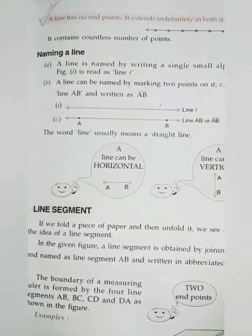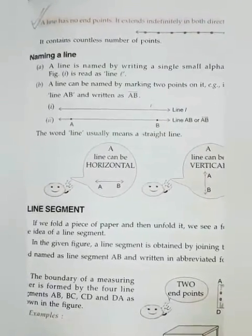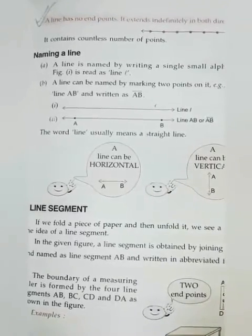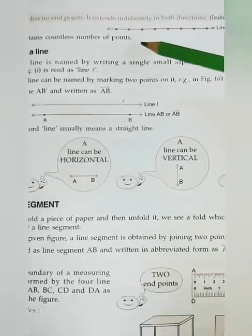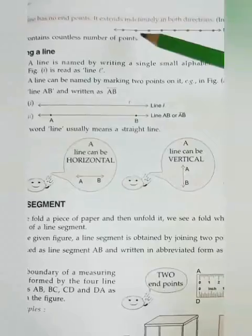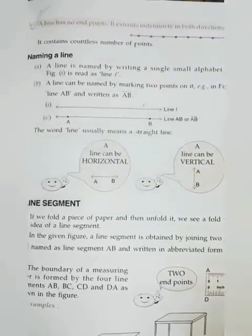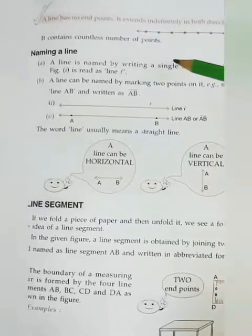Children, a line has no end points. It extends indefinitely in both directions. Here, we note a line with two arrow marks, means we extend both sides. It contains countless number of points.